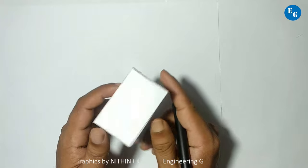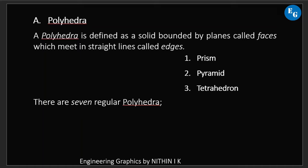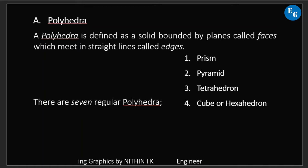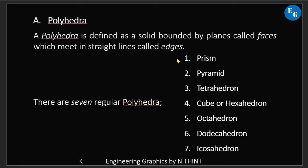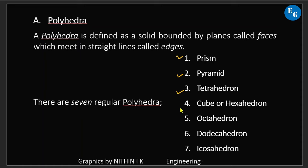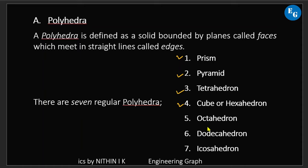There are seven types of polyhedra: prism, pyramid, tetrahedron, cube or hexahedron, octahedron, dodecahedron, and icosahedron. For the syllabus of projections of solids, we will discuss prism, pyramid, tetrahedron, and cube. Octahedron, dodecahedron, and icosahedron will be skipped.